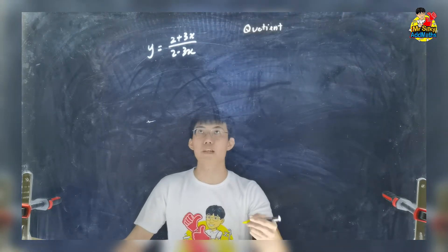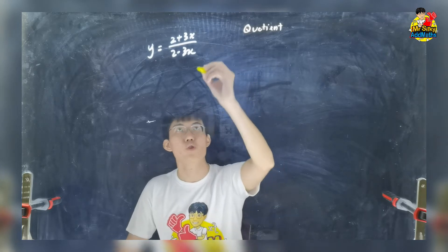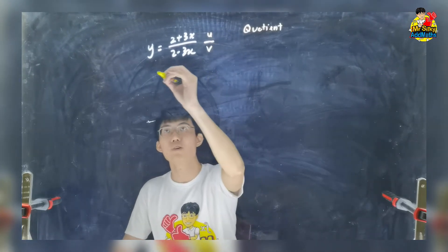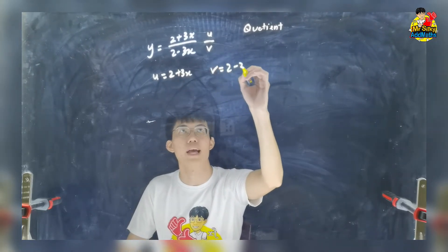Why we call quotient? Quotient means something divide. Let's say up has the x, down has an x. So what we do is label them as u over v. Now your u is 2 plus 3x and your v is 2 minus 3x.